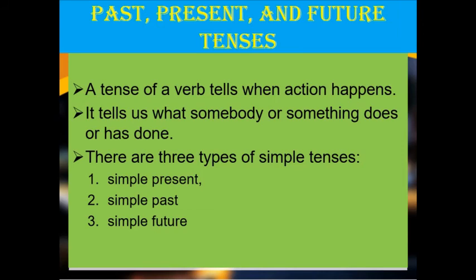A tense of a verb tells when an action happens. It also tells you what somebody or something does or has done. Now, students, there are three types of simple tenses: one, simple present tense; two, simple past tense; and three, simple future tense. These are the three tenses that you need to know.